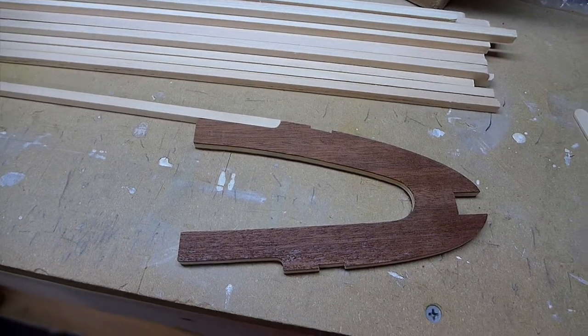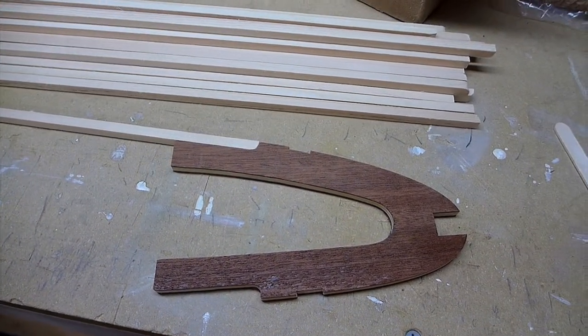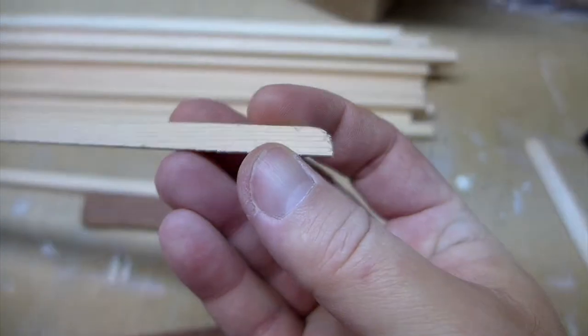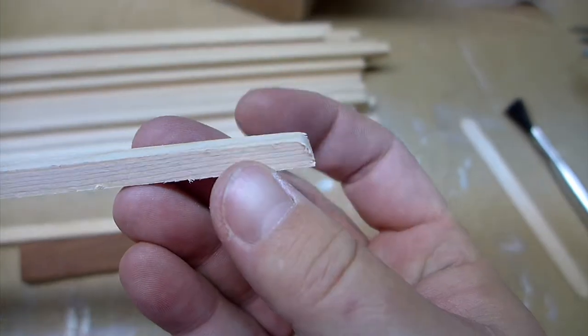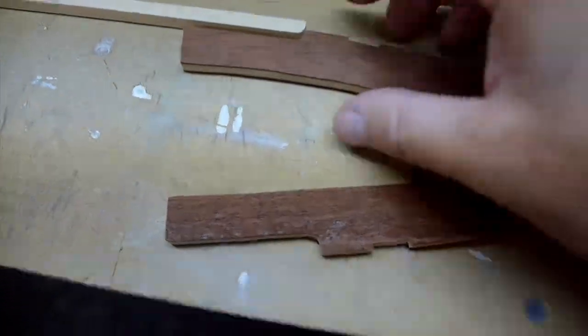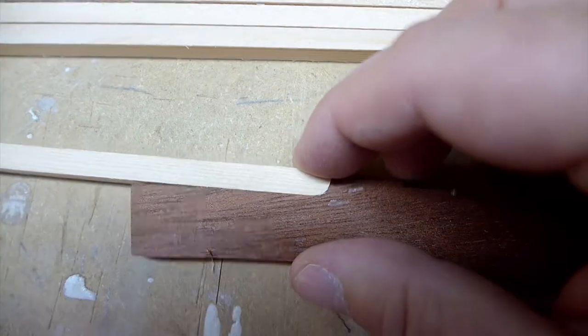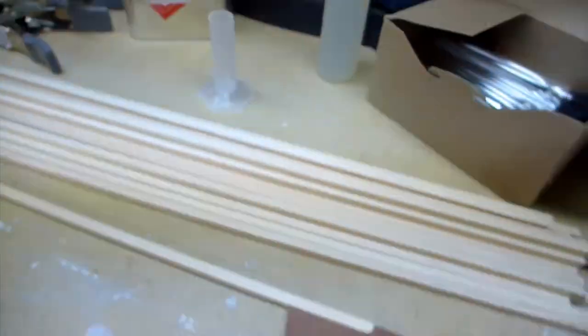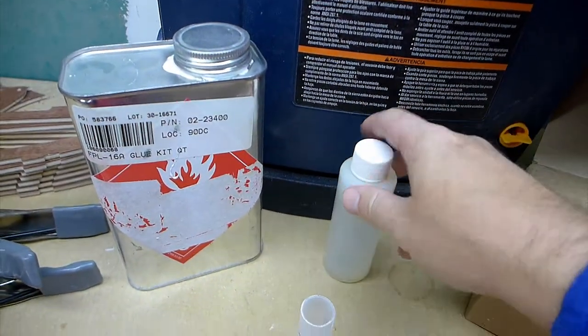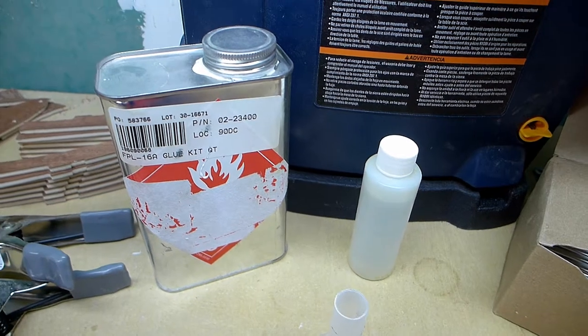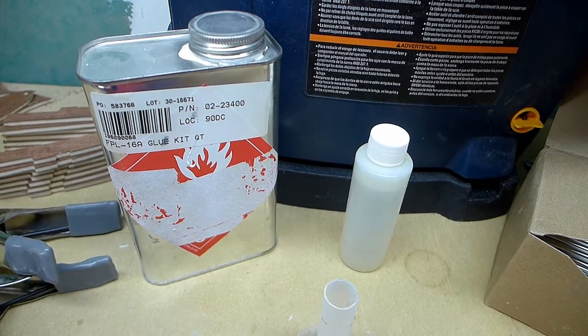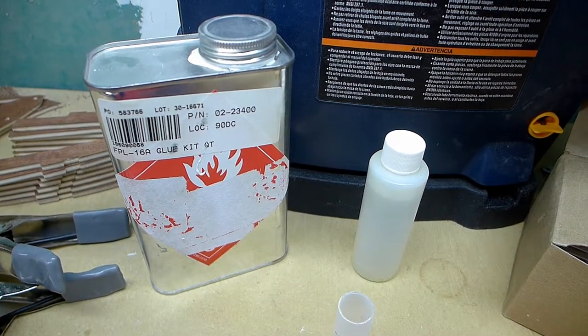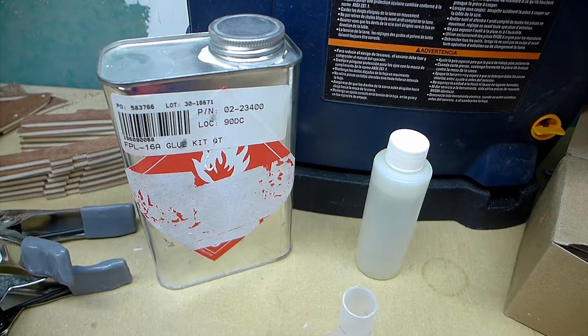So I'm ready to start gluing up the ribs, or epoxying them up, as it were. I rounded over the front corners of some of these quarter by quarter inch cap strips so that they fit into that corner left by the router bit. The epoxy is just the epoxy that Aircraft Spruce sends to you when you buy the woods package for the wings. It's made by Forest Products Laboratory, and they call it FPL-16A.